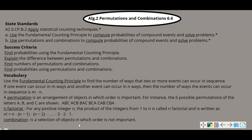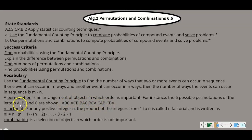A permutation is an arrangement of objects in which order is important. That's very important to remember — permutation, order is important. For instance, the six possible permutations of the letters A, B, and C are shown. There are six different ways you can rearrange those three letters.